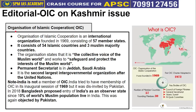First of all, we can understand that OIC is the Organization of Islamic Cooperation. It is an international organization founded in 1969 with 57 member countries. The name says it all — it comprises countries where Islam is the state religion, or countries that have a Muslim majority population.